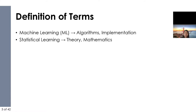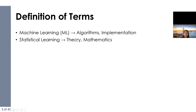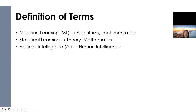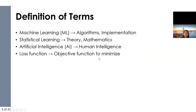First, let's get on the same page in terms of terminology. When I talk about machine learning, I'm talking about the algorithms and implementation of theory and mathematics. Statistical learning is a broader term. I'm not going to be talking about artificial intelligence — sometimes these things get grouped together, but AI is really trying to model human intelligence. We're talking about predictive modeling and machine learning. When I talk about loss function, I mean the objective function that we minimize. In our research group we usually say objective function; in statistical learning they say loss function, so I'll go with loss.